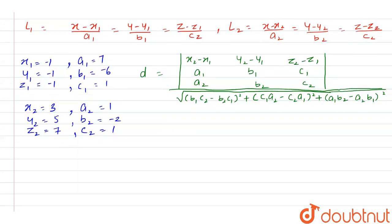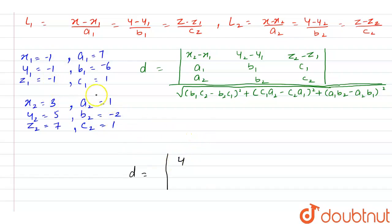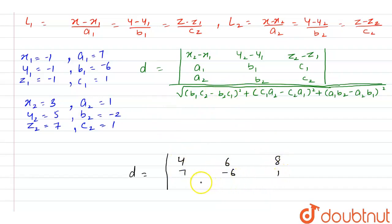Using this formula, the shortest distance d equals the mod of the determinant of [x2-x1, y2-y1, z2-z1; a1, b1, c1; a2, b2, c2]. Substituting: x2-x1 = 3-(-1) = 4, y2-y1 = 5-(-1) = 6, z2-z1 = 7-(-1) = 8. Row 2 is 7, -6, 1 and row 3 is 1, -2, 1.